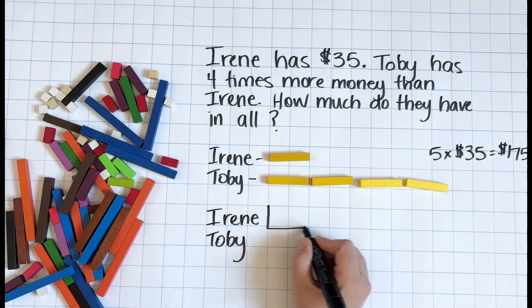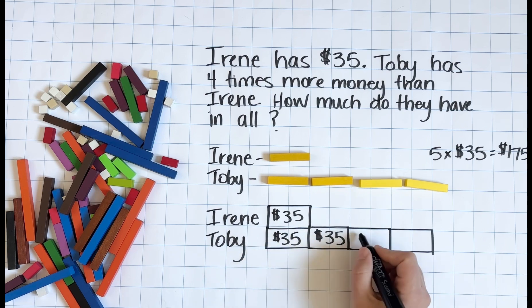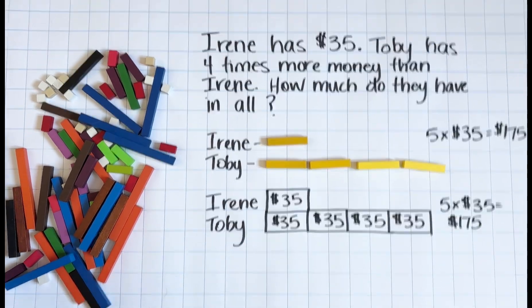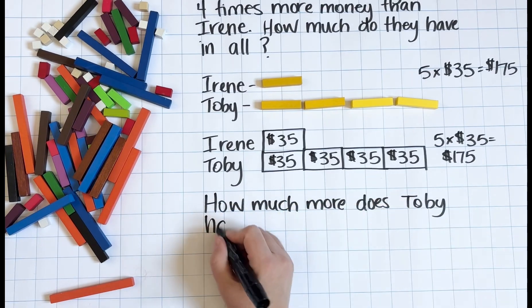Now let's draw a model to go with it. We have two variables here. We've got Irene's money and we've got Toby's money. Again, the model allows us to clearly see five groups of 35 as the total amount of money, something that might feel somewhat abstract to students without a visual.